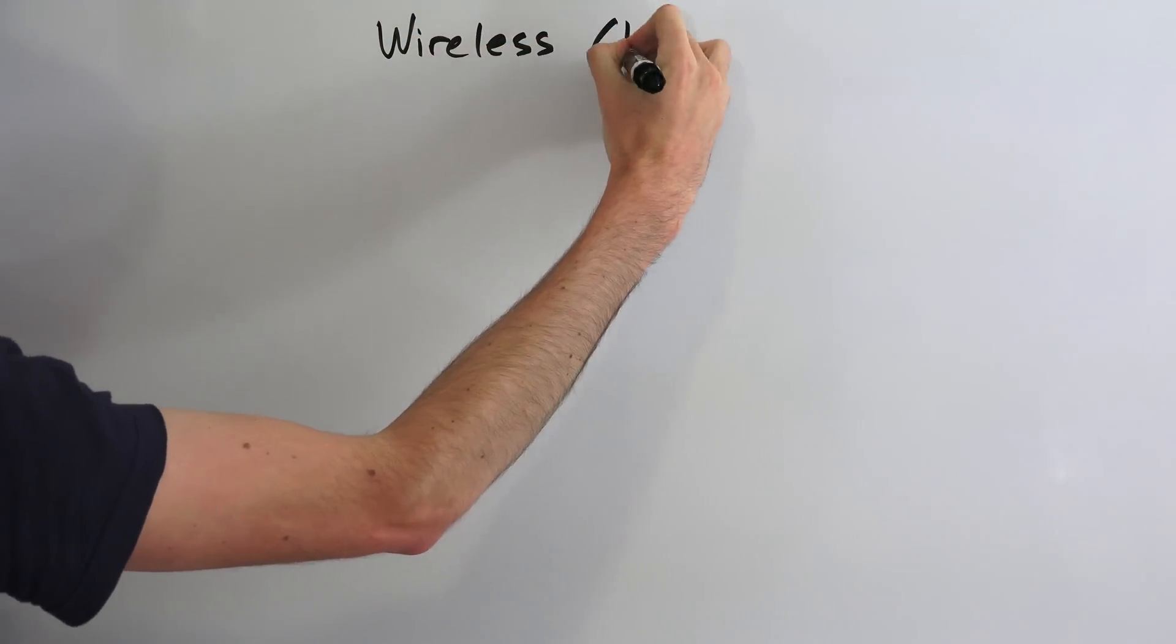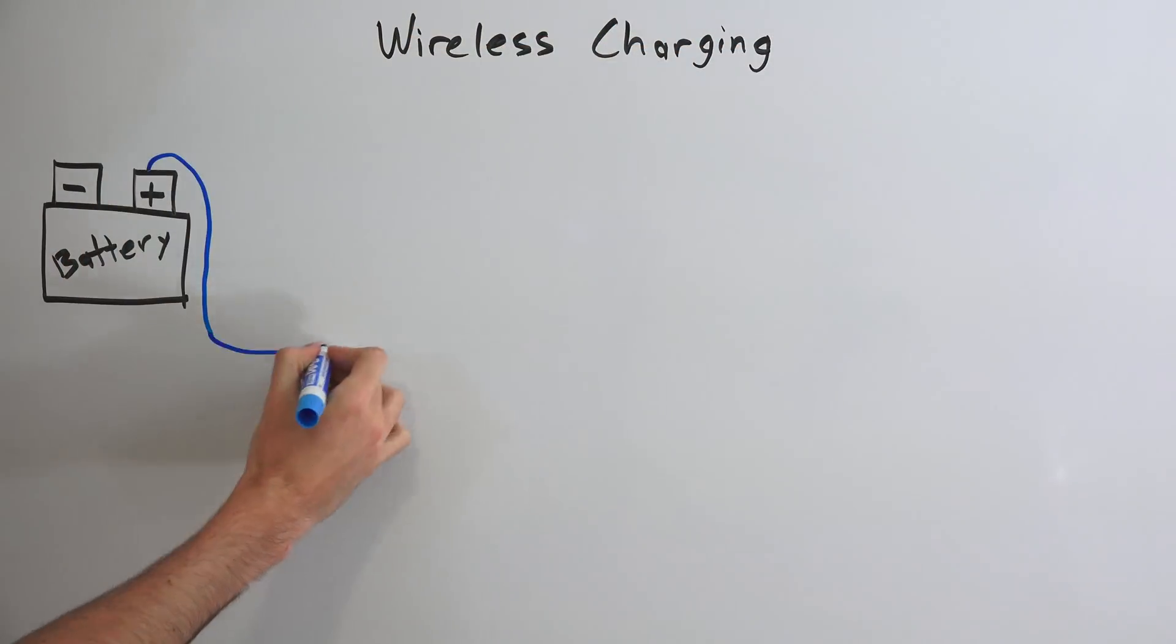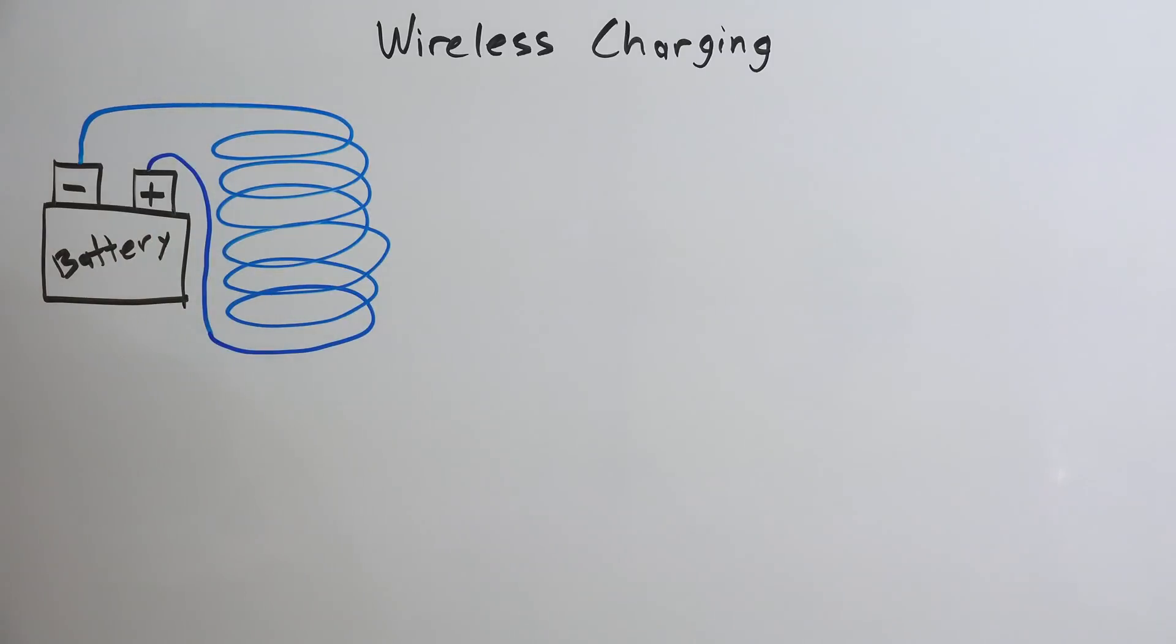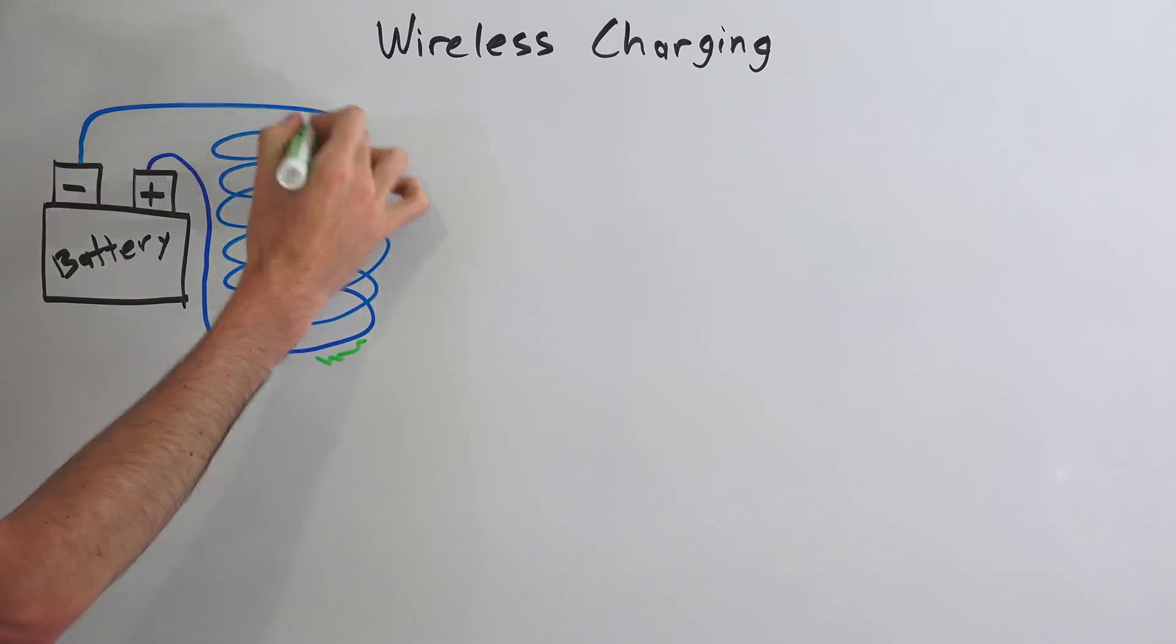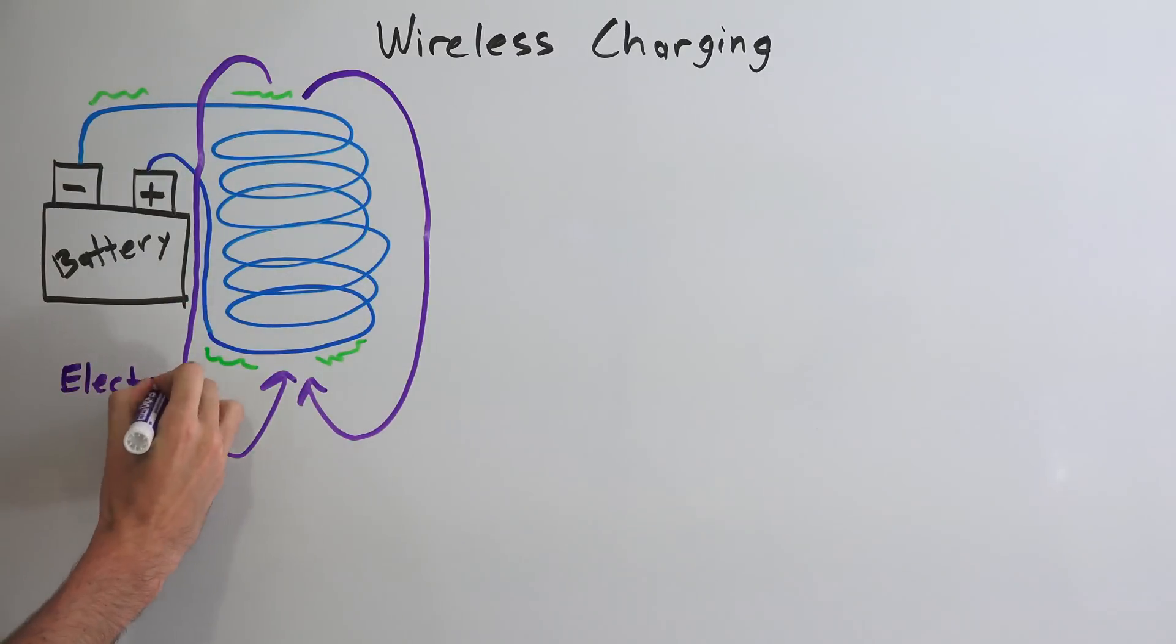In order to understand wireless charging, we need to understand electromagnets, which I have an additional video explaining in detail how they work. The idea is that if you apply a current through a wire coil, this current will induce a magnetic field surrounding the coil.